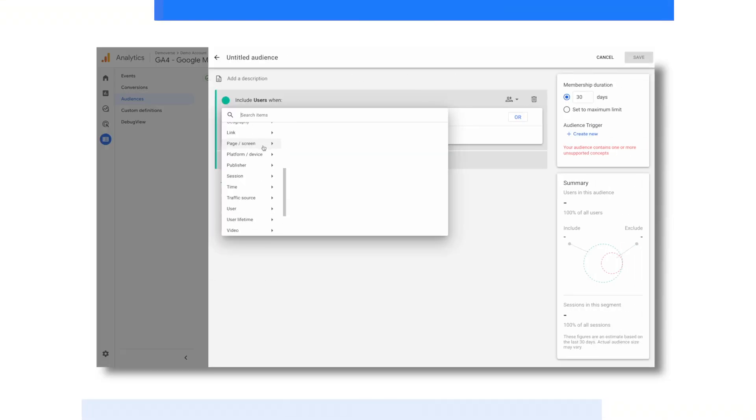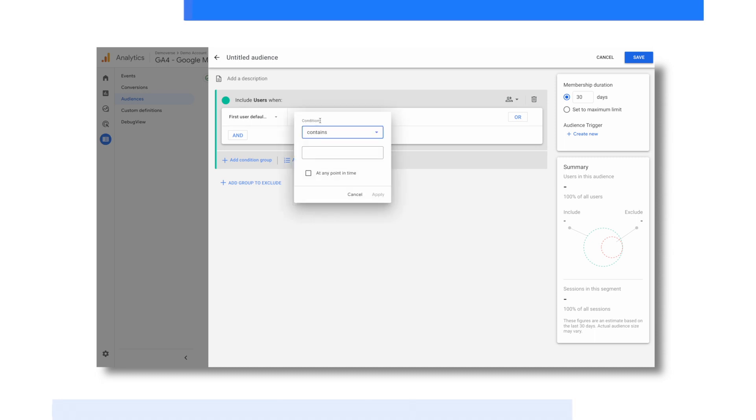We'll start by adding a new condition and we'll scroll down to traffic source and select first user default channel grouping. We'll set the filter condition as contains organic search and hit apply.